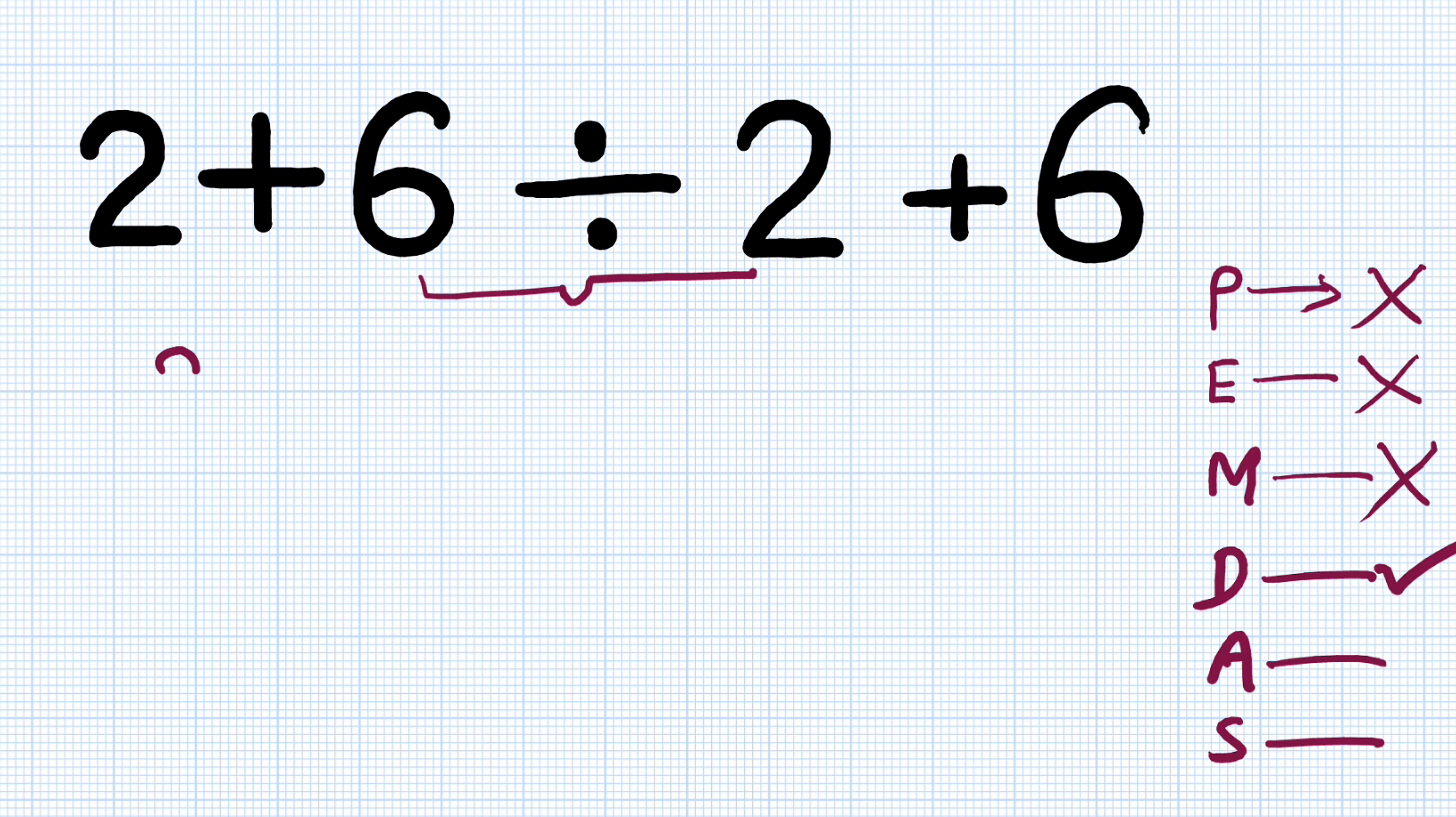So, 2 as it is. 6 divided by 2 will be equal to 3 plus 6. 2 plus 3 will be equal to 5 plus 6 which will be equal to 11 which will be our correct answer. Thank you for your support.